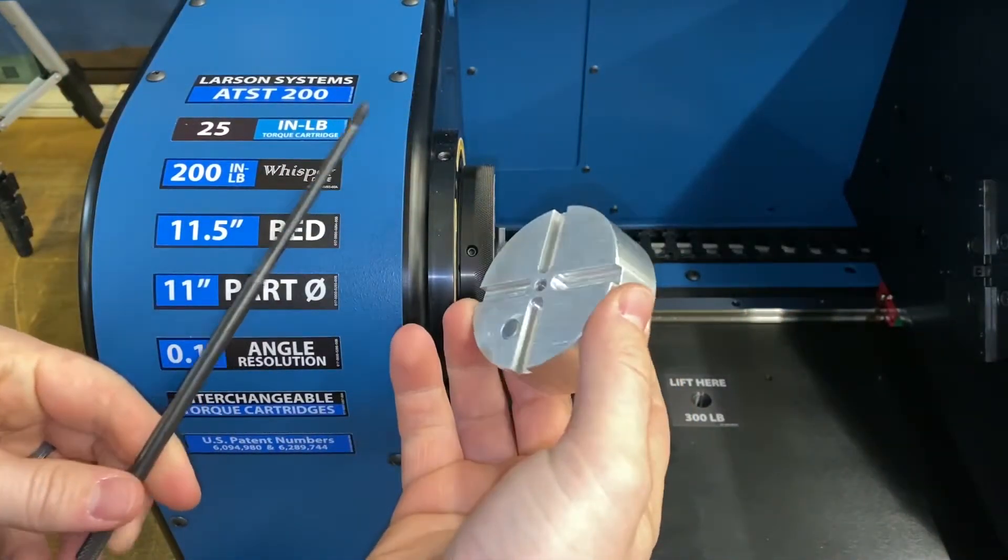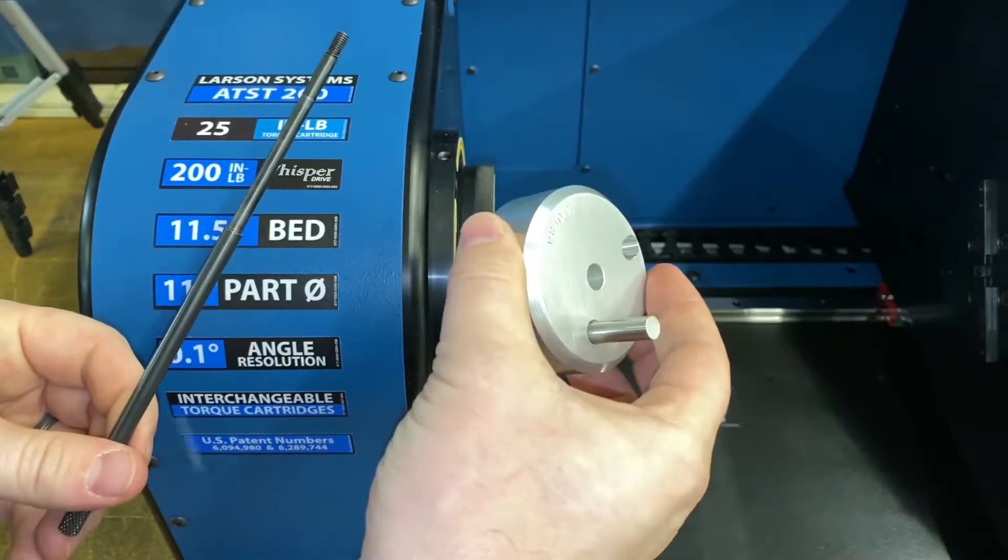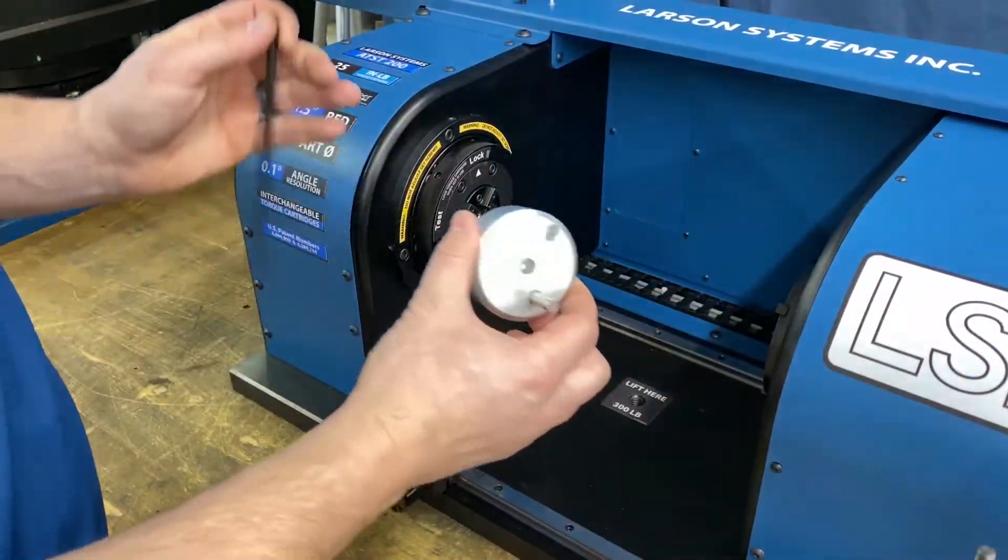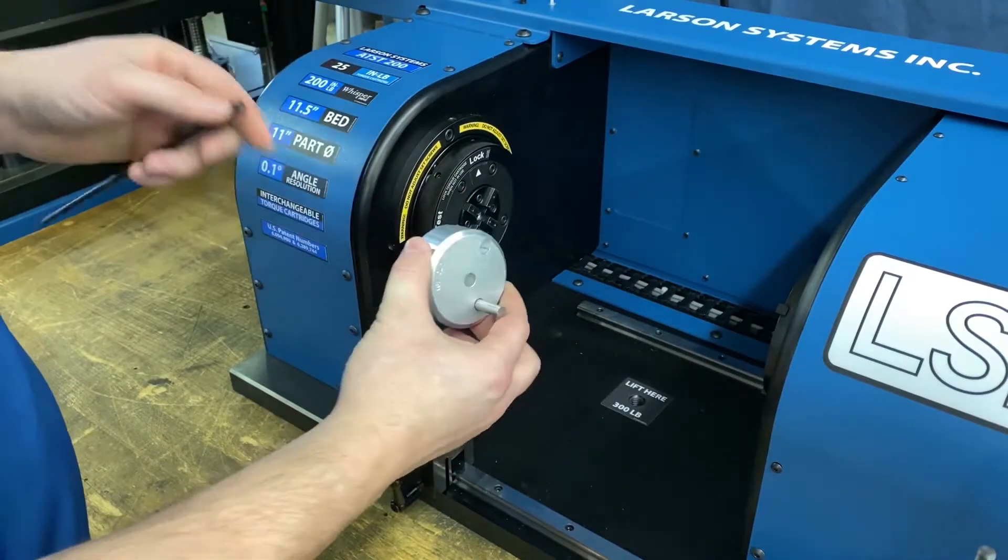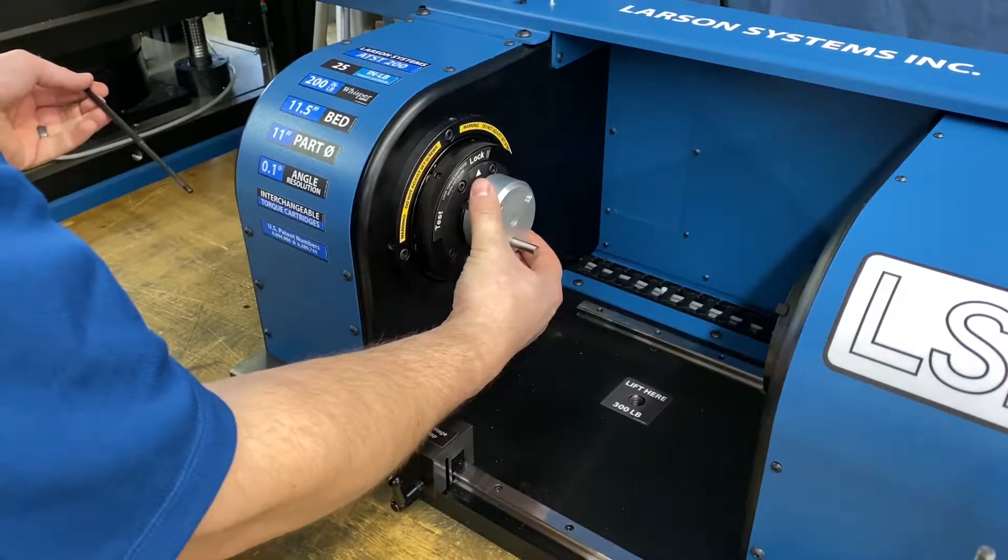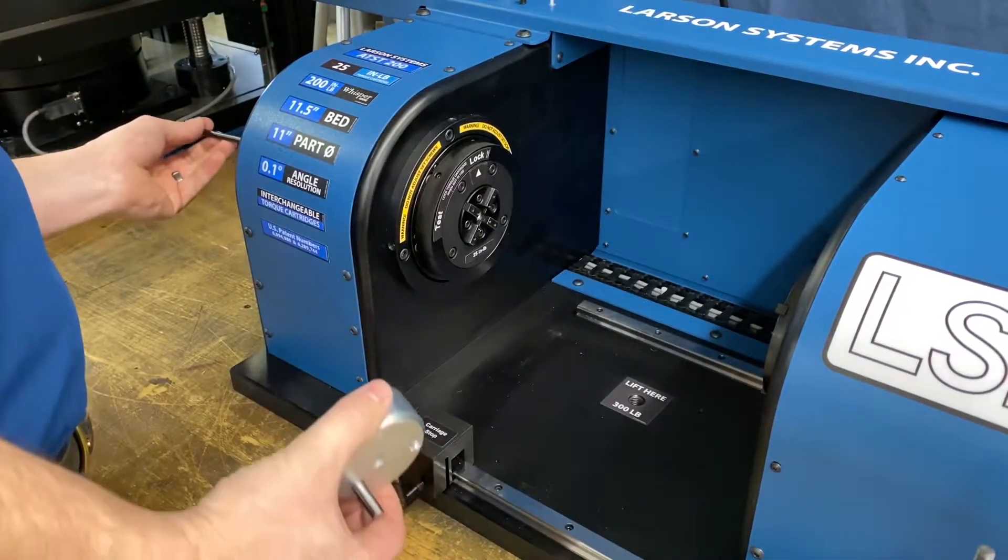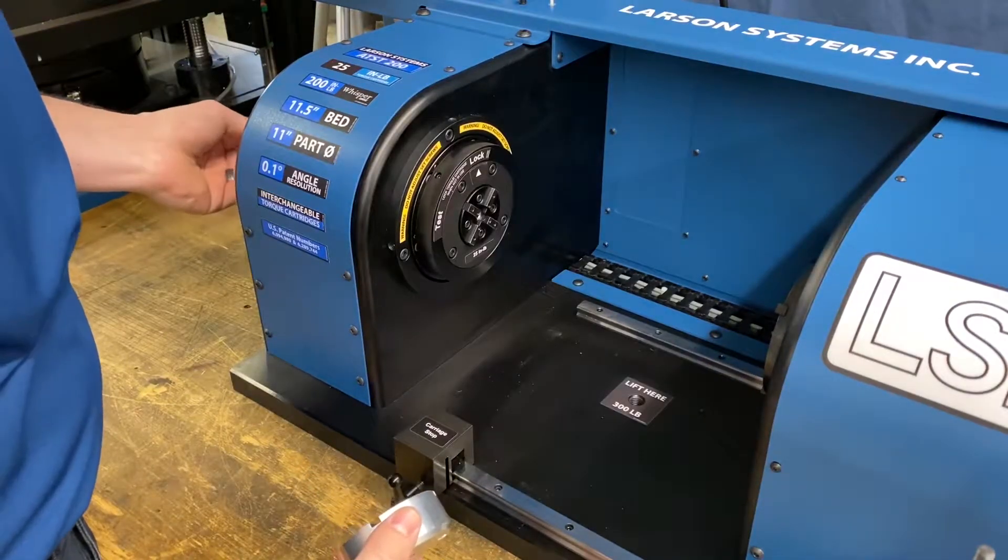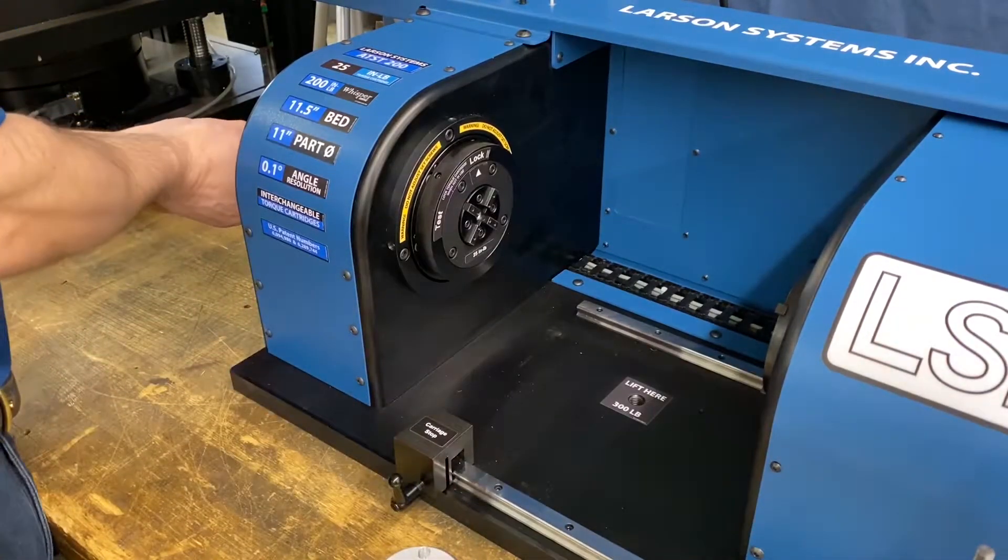Here is some custom tooling for the torsion spring tester. We're going to show you how to set it up. This is the homing key, the homing hole. You're going to put that on the torsion cell right there, and you're going to use the draw bar to tighten it.